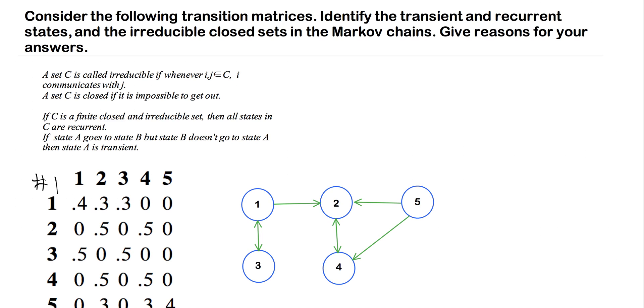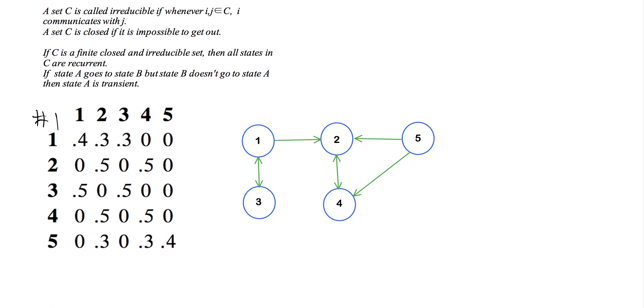So we'll start here with the first Markov chain. Now note, I represented all of these Markov chains graphically here with these blue circles and green arrows. And what I'm doing here is that, let's take one for example, we'll start here.